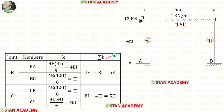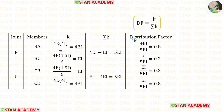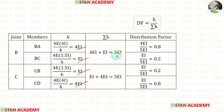Now let us find Sigma K. In joint B we have to add these two values; after adding we are getting 5EI. In joint C we have to add these two values; after adding we are getting 5EI. Now let us find the distribution factors. The formula is K upon Sigma K. We have calculated the values of K and Sigma K, and using the formula we can find the distribution factors.